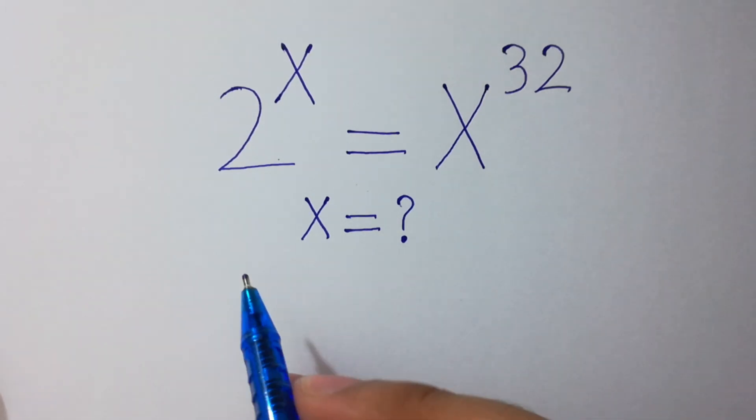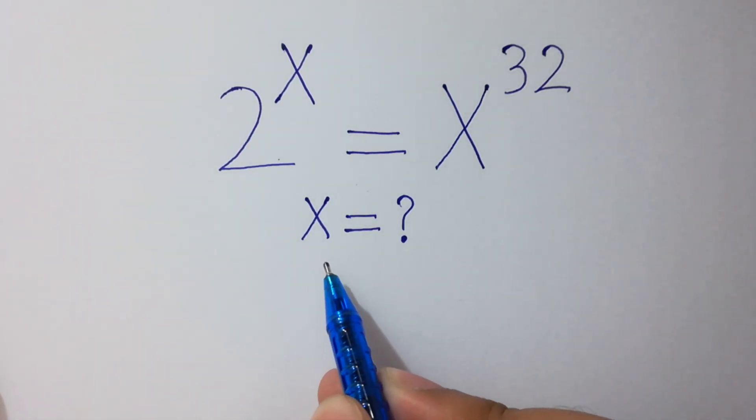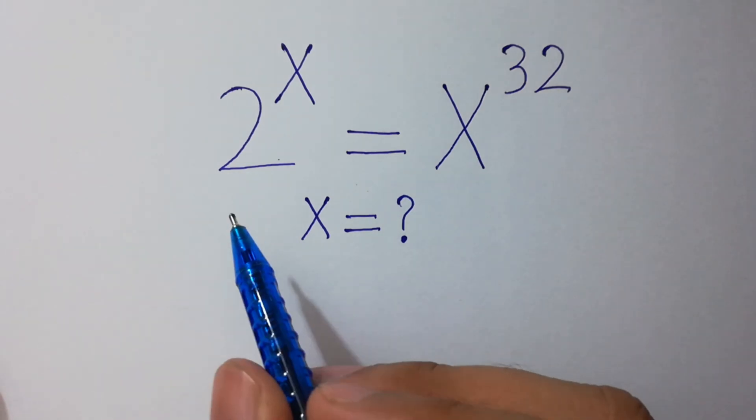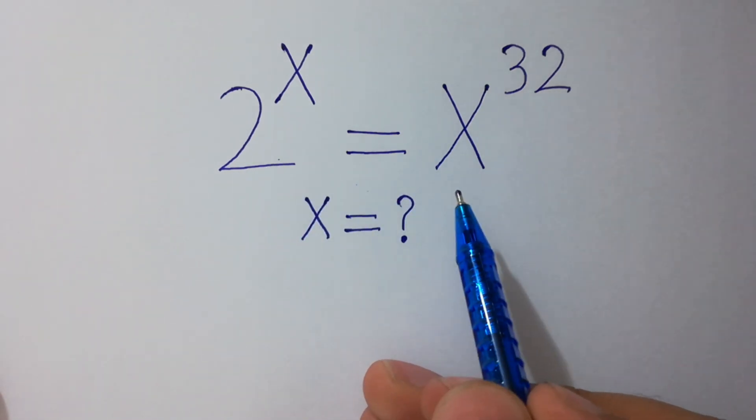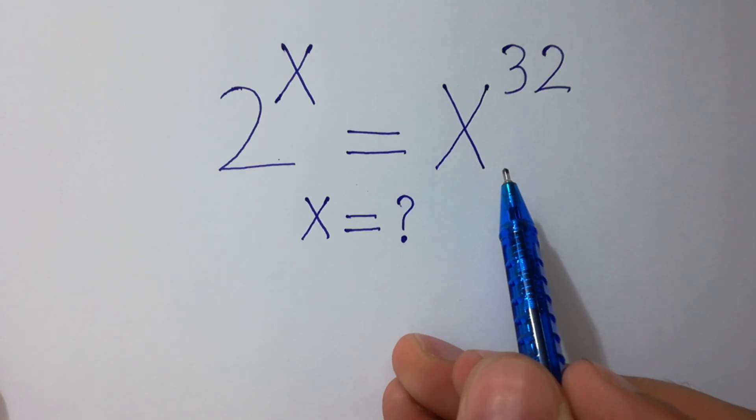Hello friends, can you find the value of x if 2 to the power x equals to x to the power 32?